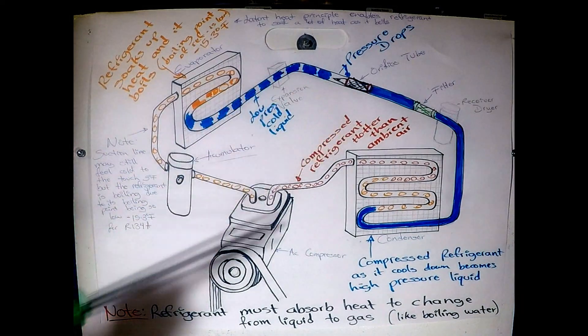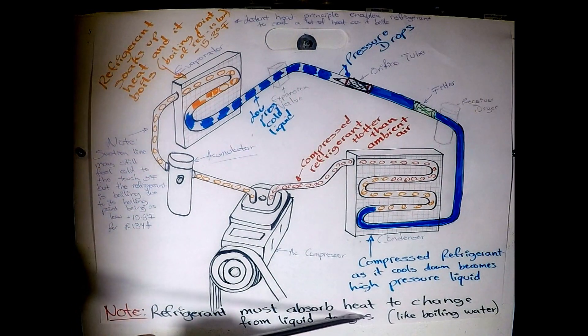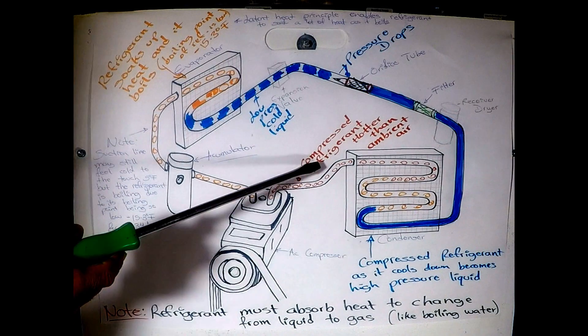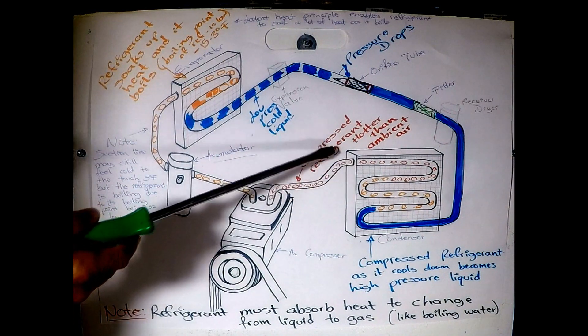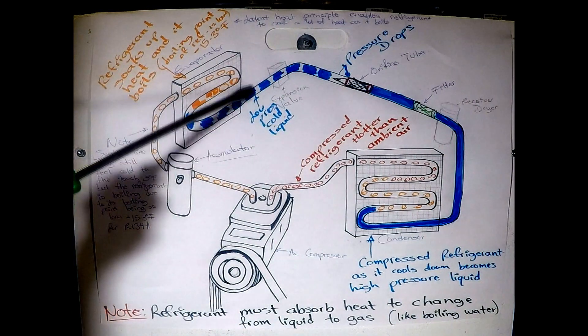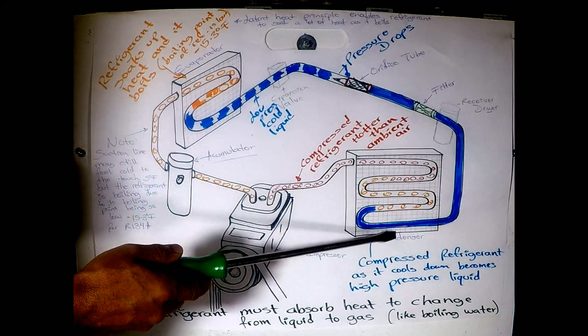And this ties into the principle that a refrigerant must absorb heat in order to change from a liquid to gas. Just like boiling water. That's why I keep bringing that example. So by now the explanation of what's in this drawing should enable you to understand your air conditioning system and how the heat of your car was absorbed by the refrigerant at the evaporator and it was released at the AC condenser.